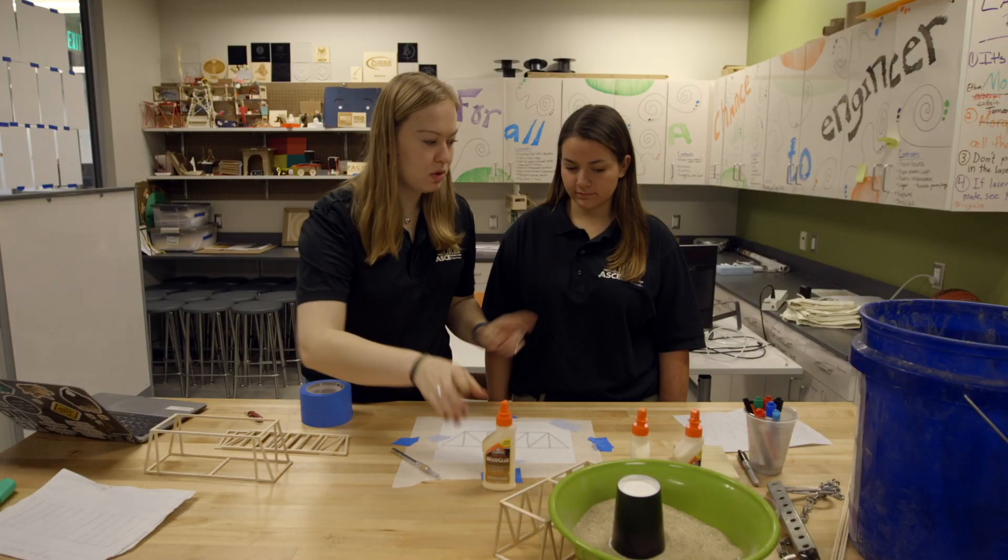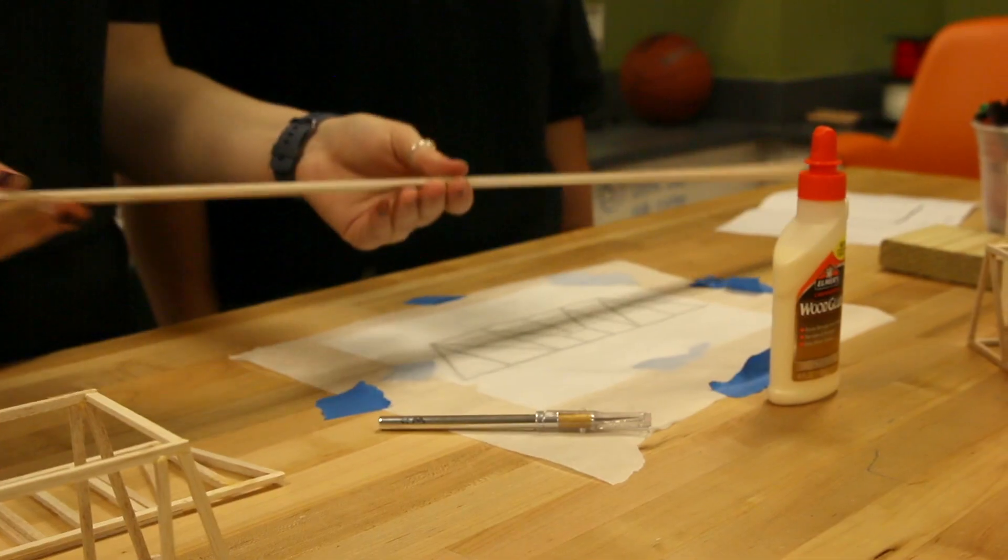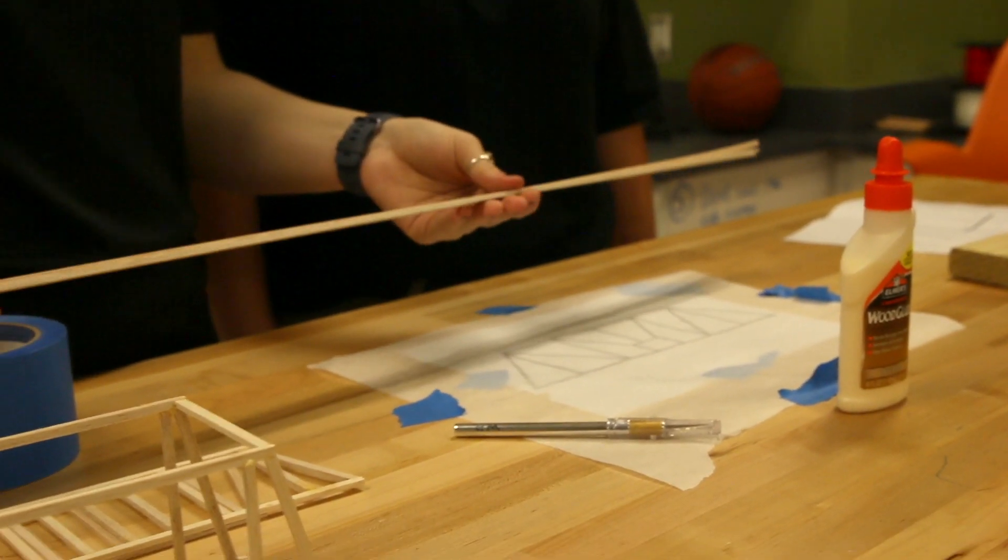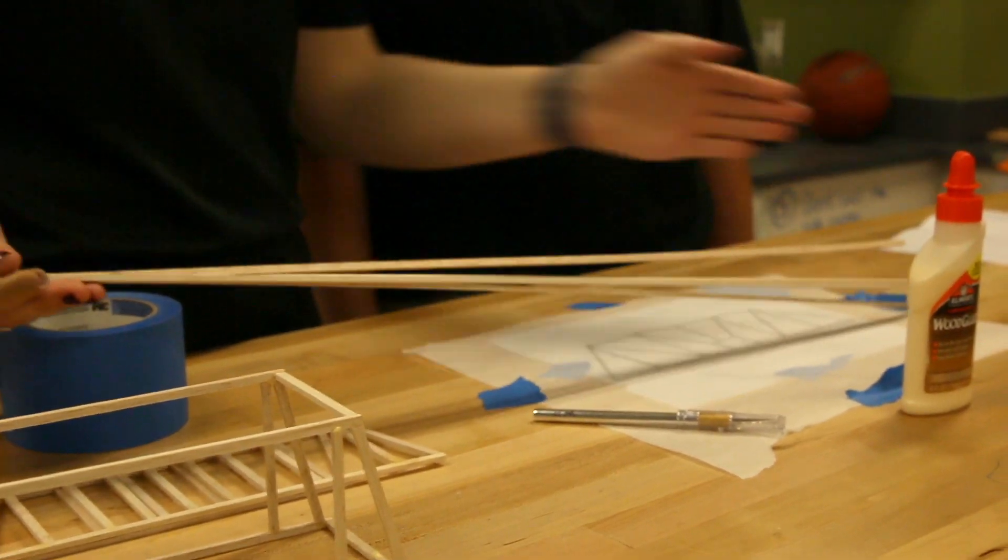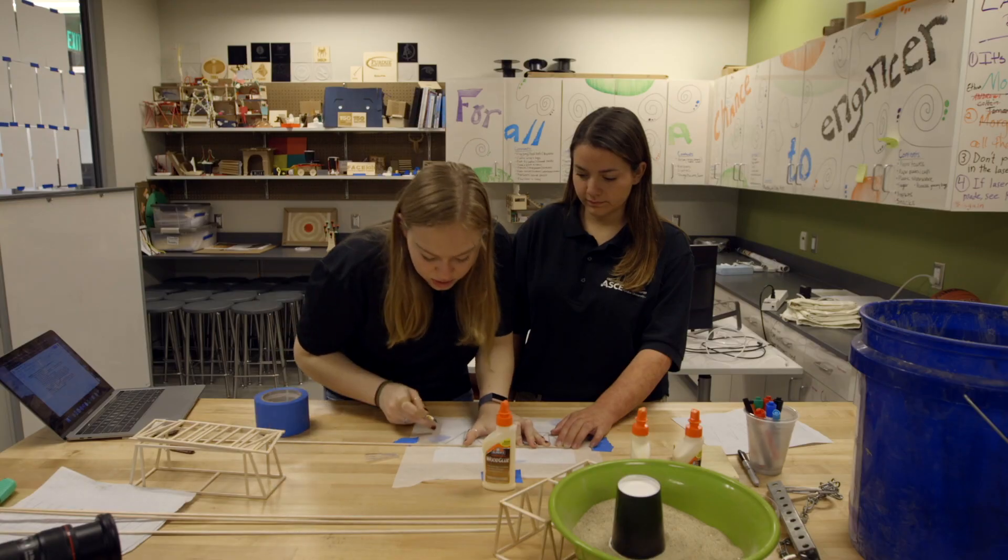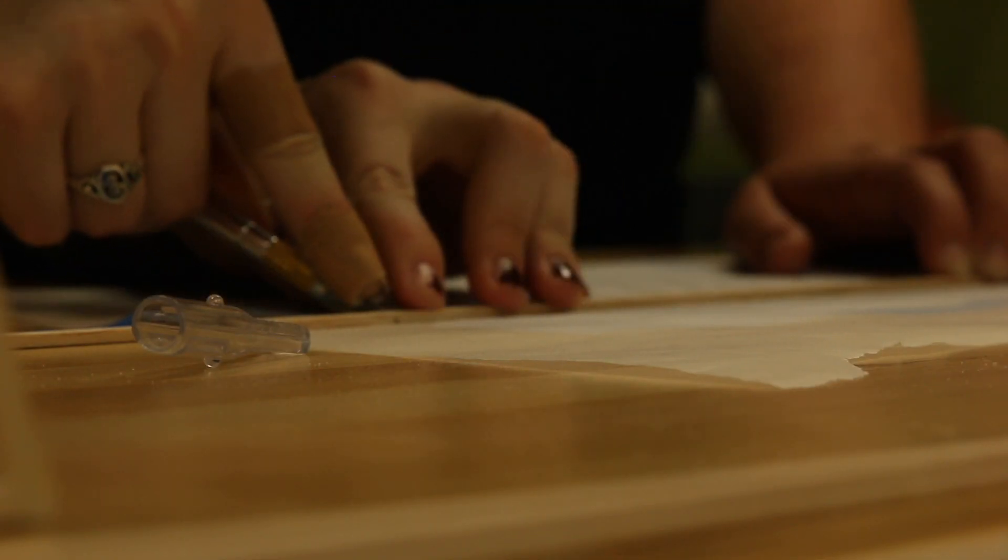Then you're going to want to grab your exacto knife, your glue, and your balsa wood. What you're going to want to do is make sure this all lines up here. So here we're going to take the exacto knife—this one measures up length to length—and then you're going to measure out exactly where your bridge ends.